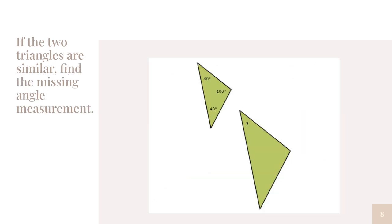On this one, the two triangles are similar. We're asked to find the missing angle measurement. I need to match up my angles. 40 would go with 40, so I know this one's 40. This 40 would go right here. Then 100, which is my biggest angle, would still be my biggest angle. In this case, my missing side length is 40.